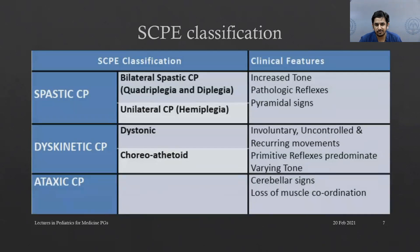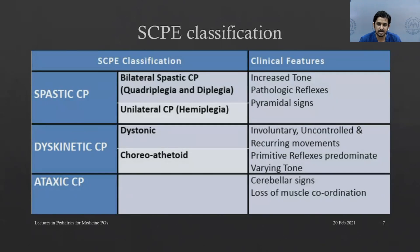The Society for Cerebral Palsy of Europe classifies cerebral palsy into three categories: spastic, dyskinetic, and ataxic cerebral palsy. Spastic CP can be further divided into bilateral and unilateral. Bilateral CP with predominant lower limb involvement is called diplegia; with all four limbs equally involved, it is called quadriplegia. Dyskinetic CP, based on predominant abnormal movements, is further classified as dystonic and choreoathetoid.